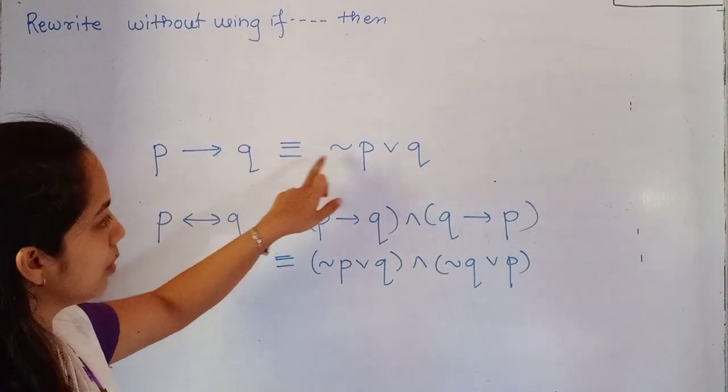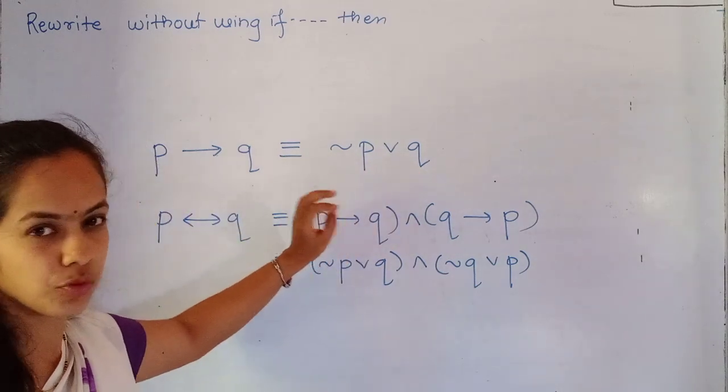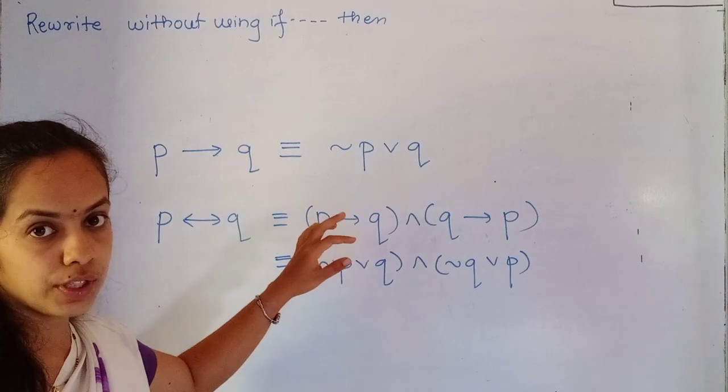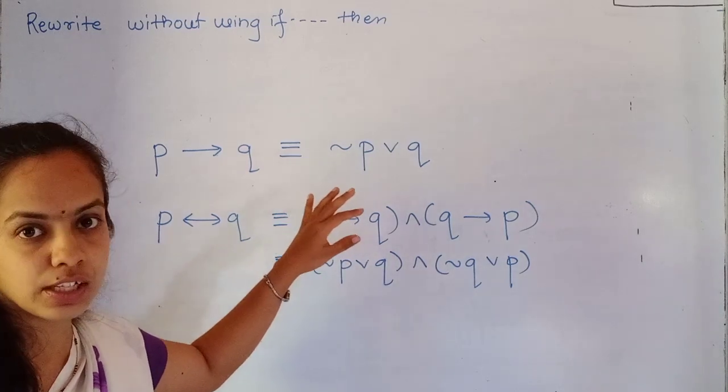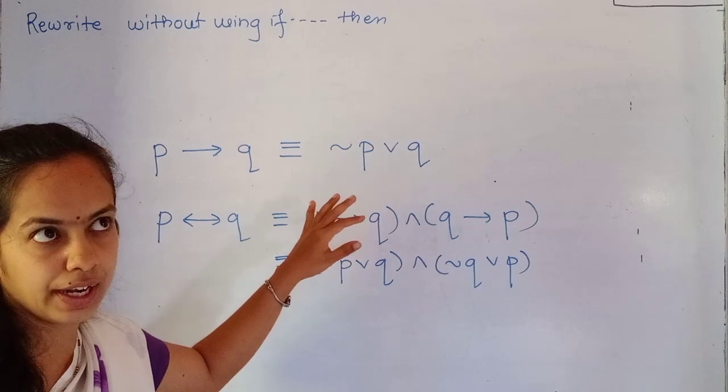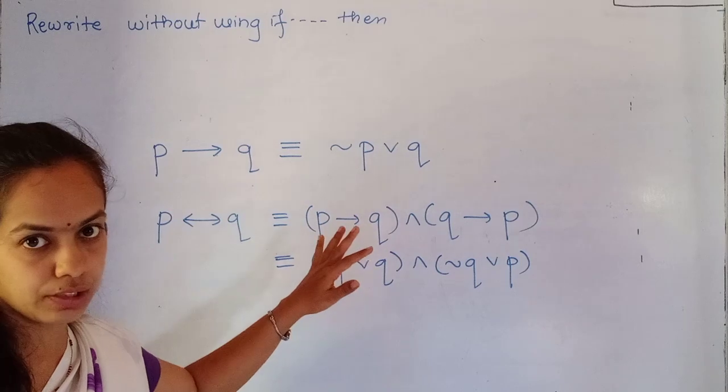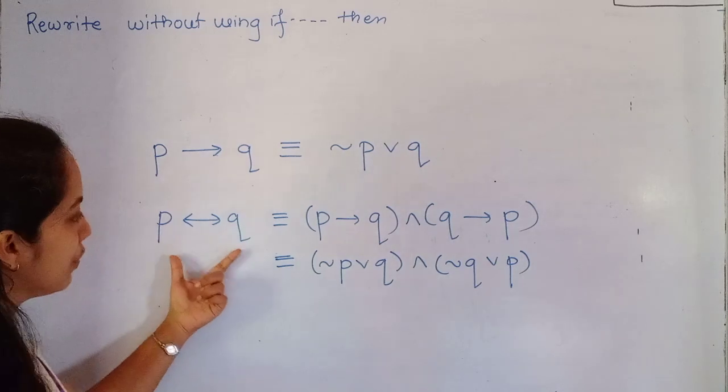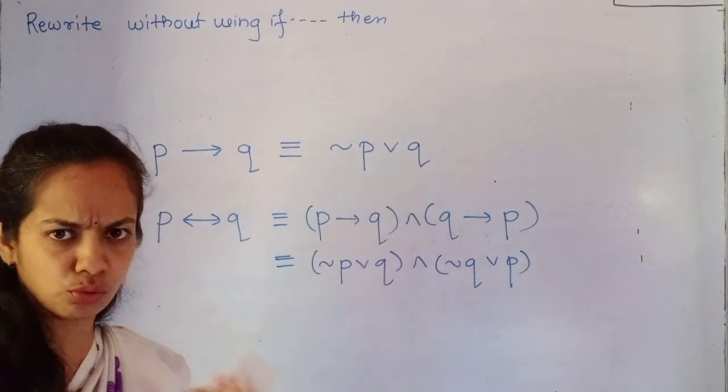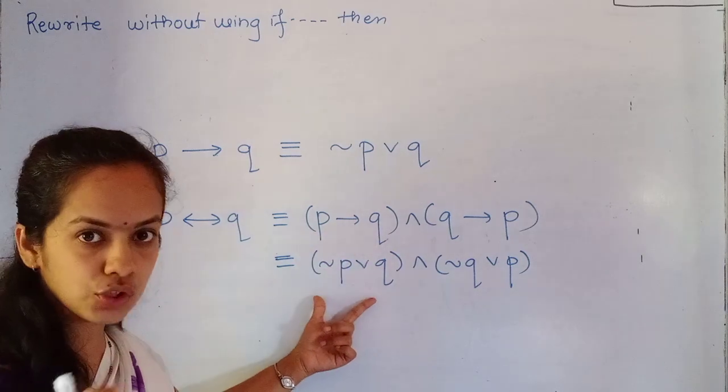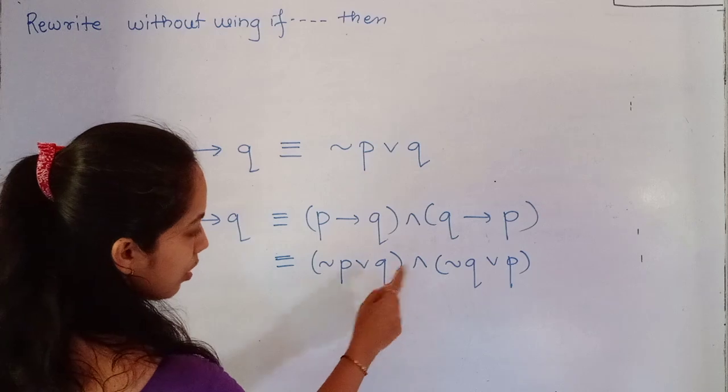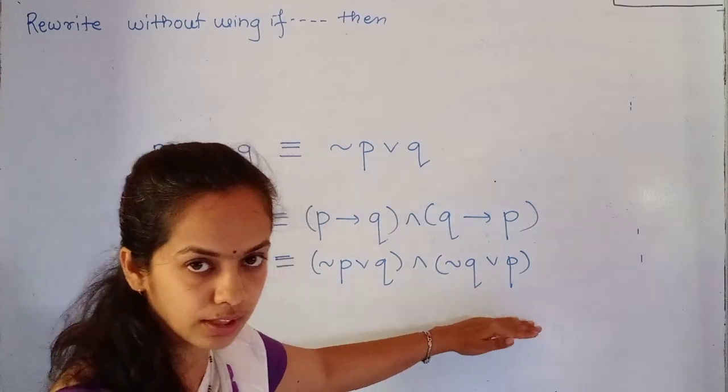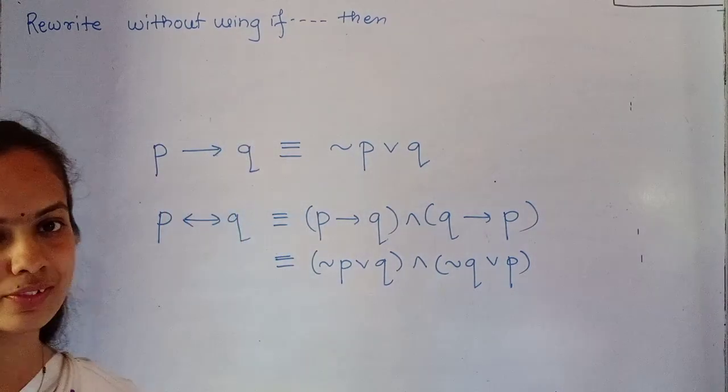P implies Q is nothing but negation P or Q. So we have to write this. Write this formula 10-15 times because in the next lecture we are going to see negations. P implies Q equals negation P or Q. Q implies P equals negation Q or P. First negation or second. Take a quick screenshot and write this 10-15 times.